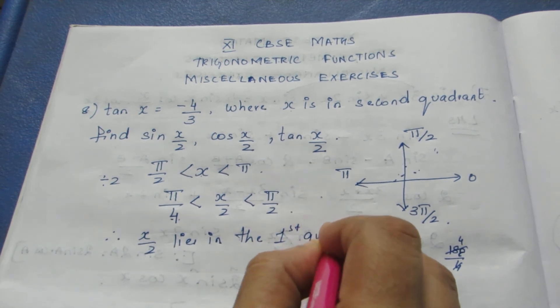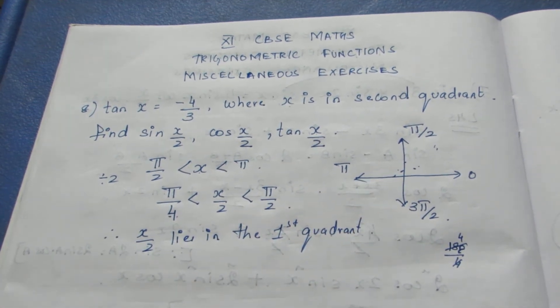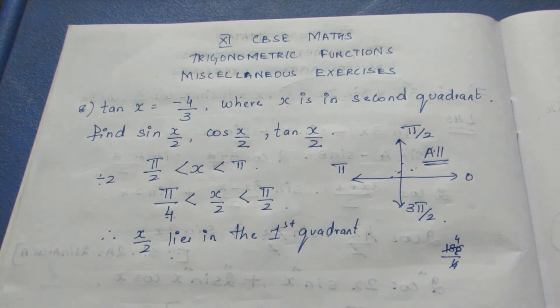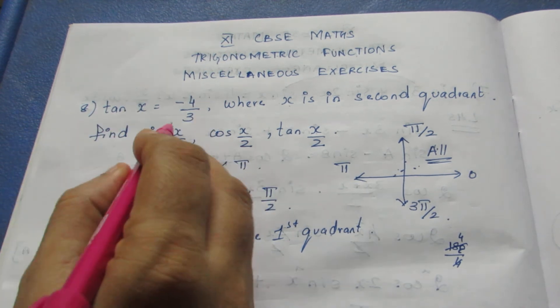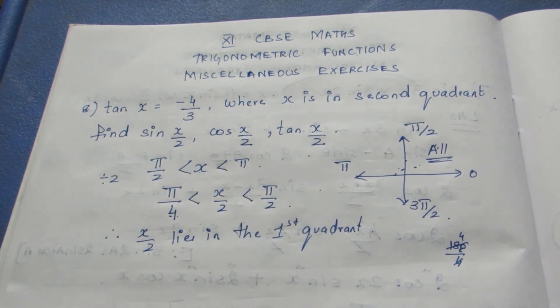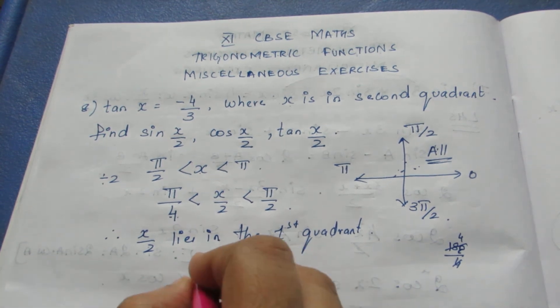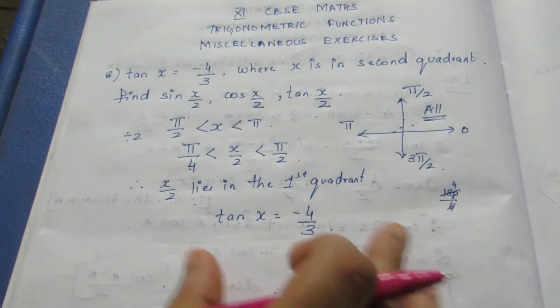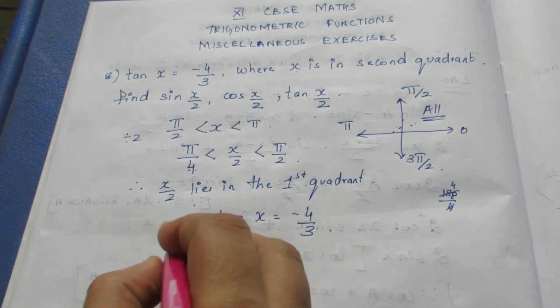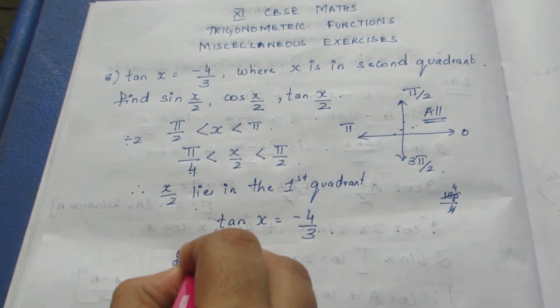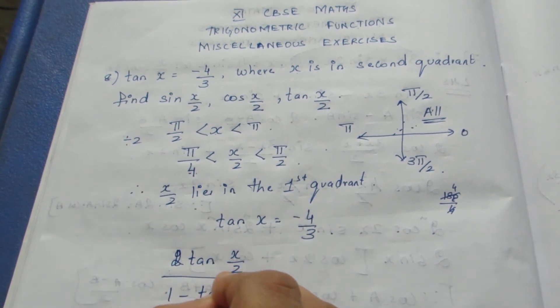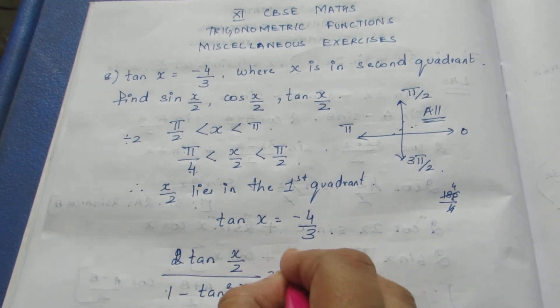Since x/2 is in the first quadrant, there is no need to worry — all trigonometric ratios are positive in the first quadrant. So we can directly take everything as positive. Now, what they have given is tan x is equal to minus 4 by 3. We know the formula: tan x equals 2 tan(x/2) divided by 1 minus tan squared(x/2), and this equals minus 4 by 3.